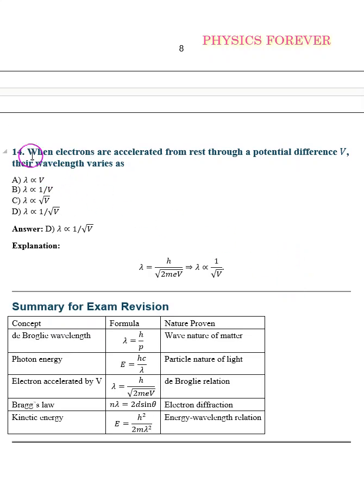Then question number 14. When electrons are accelerated from rest through a potential difference V, their wavelength varies as - so the correct option will be D. Then lambda is directly proportional to 1 by root of V.